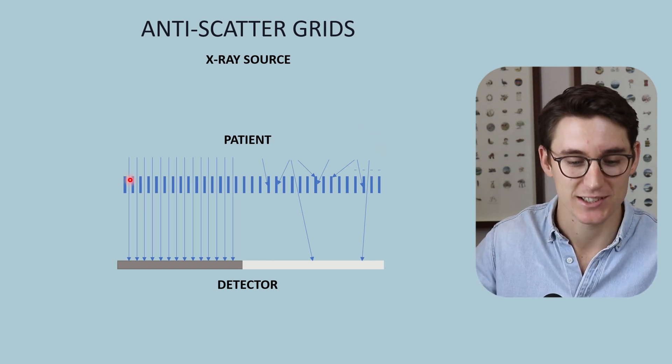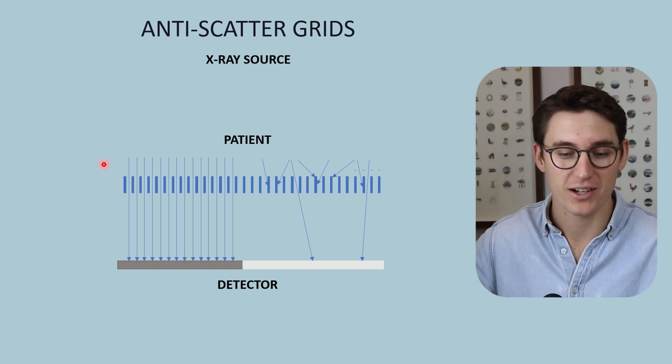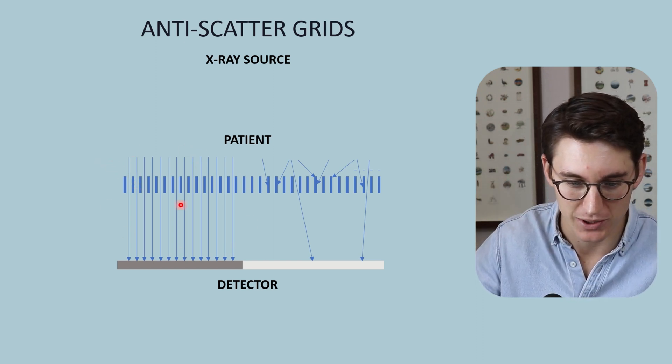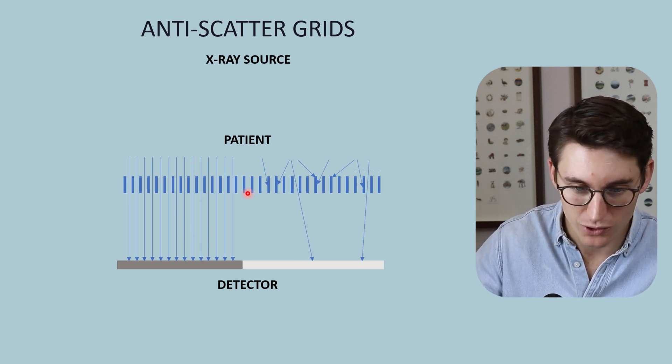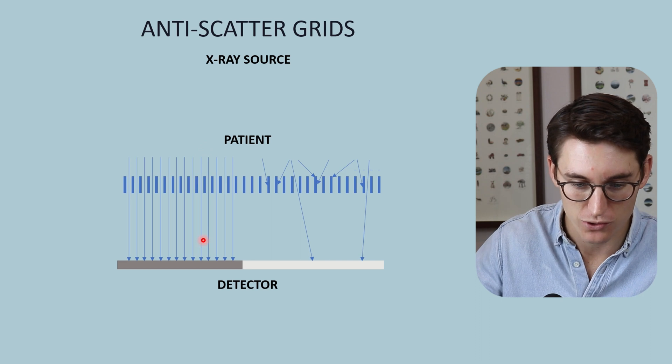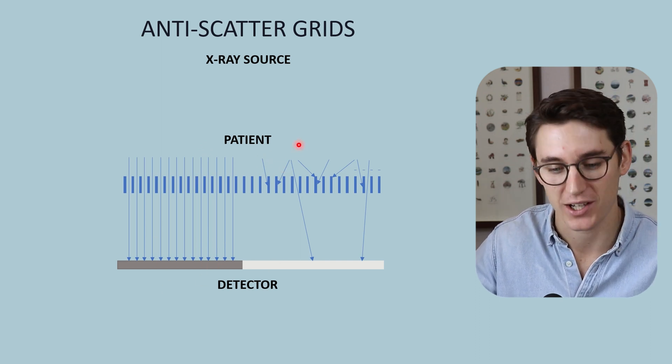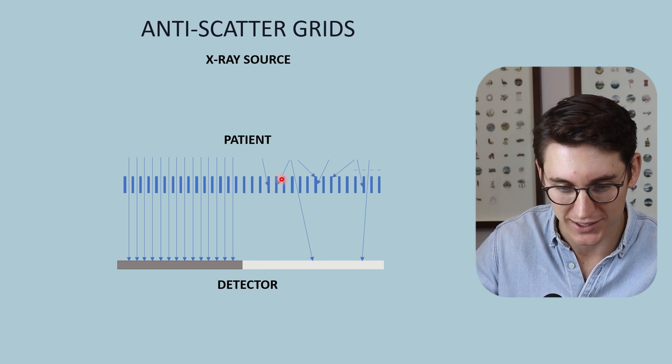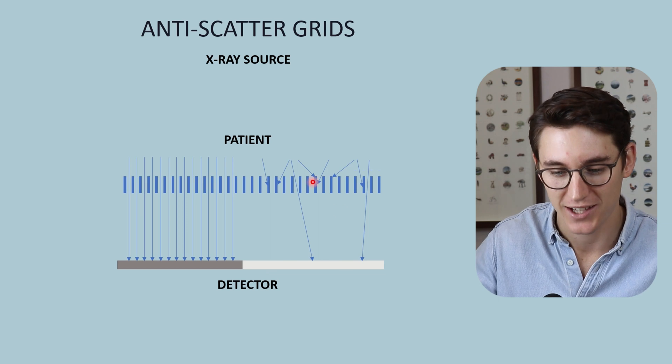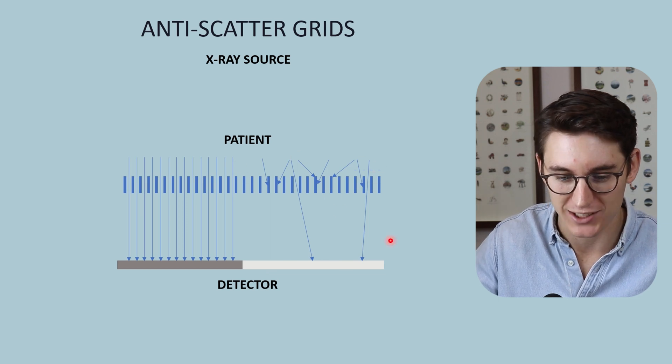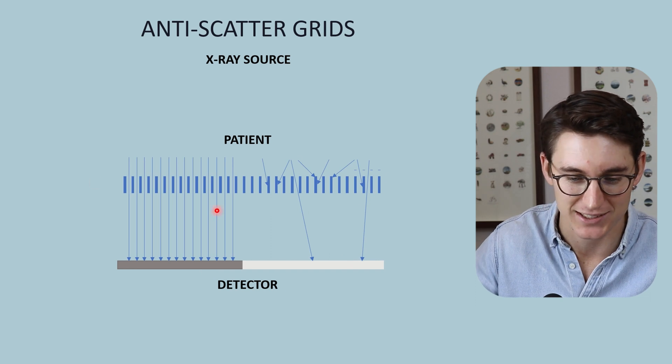Now what our anti-scatter grid is, it's a series of highly attenuating scepter that are parallel to our primary x-ray beam. Transmitted x-rays that are parallel to these anti-scatter grids will pass through the grid and hit our detector. Scattered x-rays that come off at an angle will be attenuated by these grid scepter, and very few of them will reach our detector. This is a way of reducing scatter contribution to the exposure to our detector, and it's known as an anti-scatter grid.